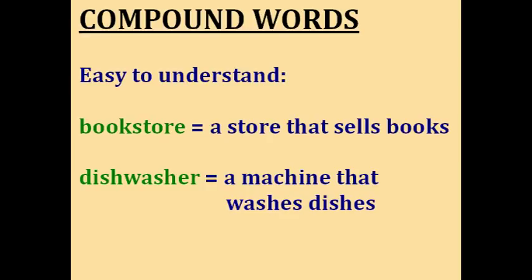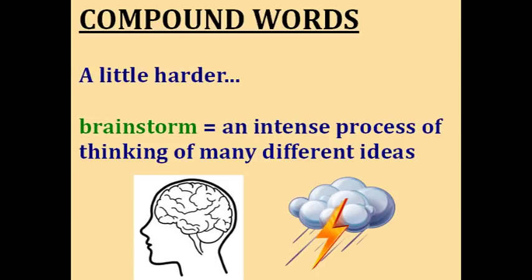Sometimes compound words are easy to understand. A bookstore is a store that sells books — makes sense. And a dishwasher is a machine that washes dishes; maybe you have one in your kitchen. But others might not be so obvious. For example, brainstorm. To brainstorm is an intense process where you think of many, many different ideas in the hopes of getting a good idea. You can see it comes from the word brain and storm.